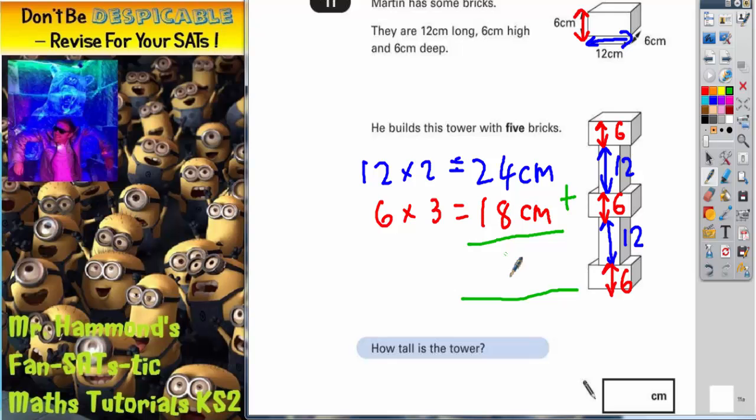So the total height of the tower would be to add these two answers together. 24 add 18. 4 add 8 is 12, put the 2 in carry the 1. 2 plus 1 is 3, plus that one that we've carried is 4. So the total height of the tower would be 42cm.